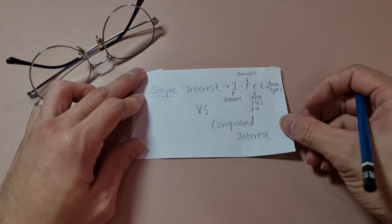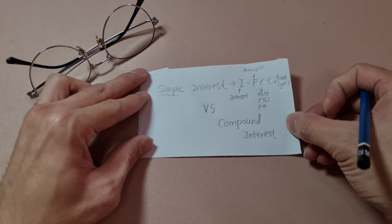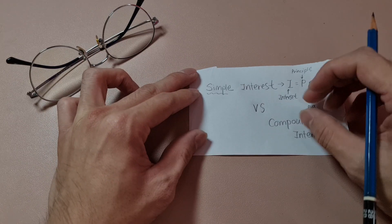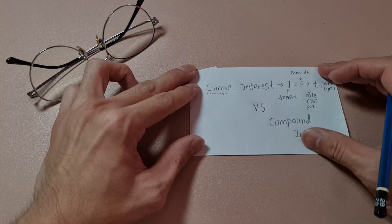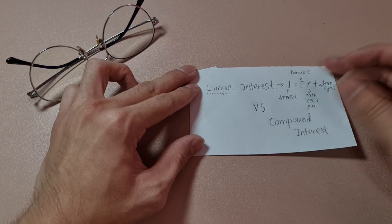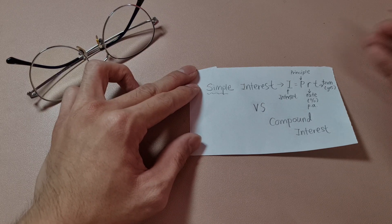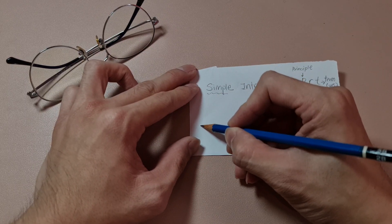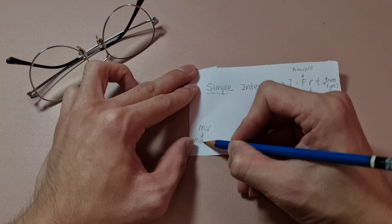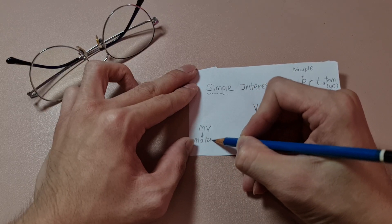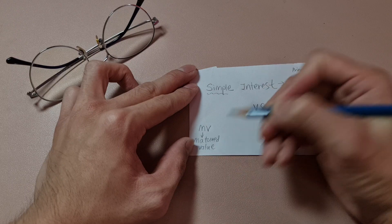When you come into compound interest, what's so special about it? Let's talk about the formula in our KSSM Form 3, chapter 3 syllabus. It will be MV — so what is MV? It means the matured value. Matured value means, depending on how many years you save in the fixed deposit.